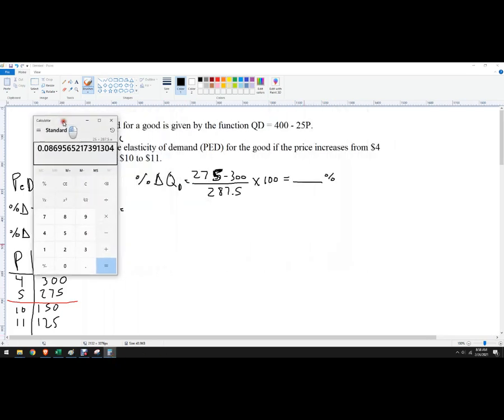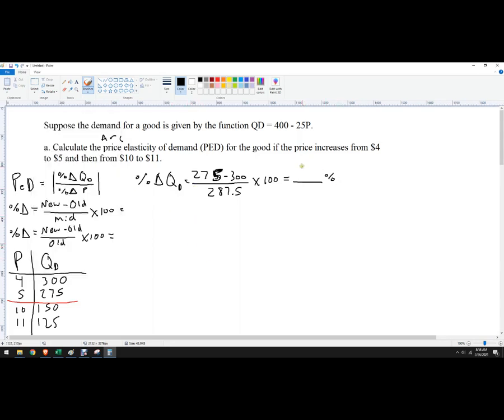Let's do that in a calculator. 275 minus 300, so it's negative 25 divided by 287.5, and I get negative 8.6 percent.